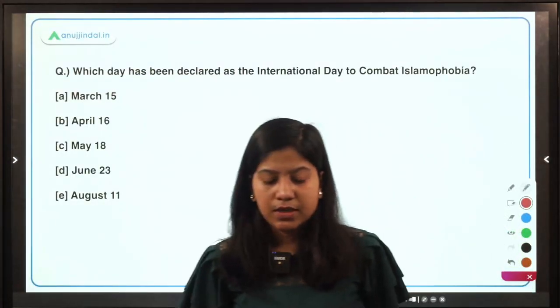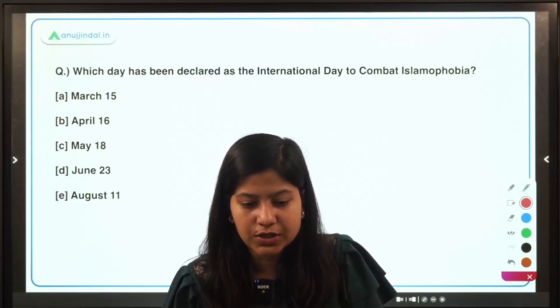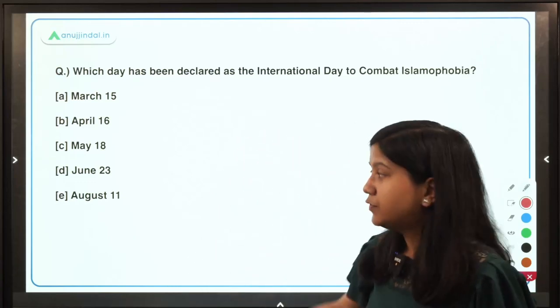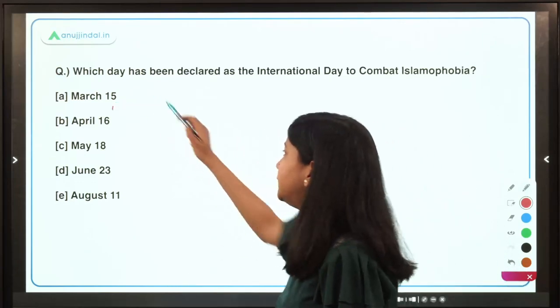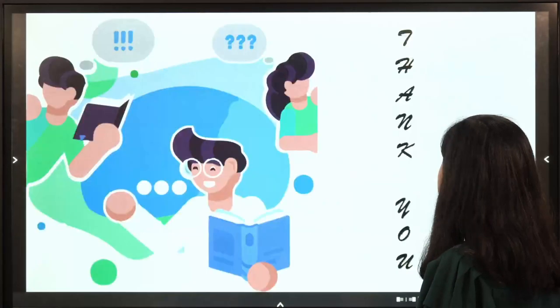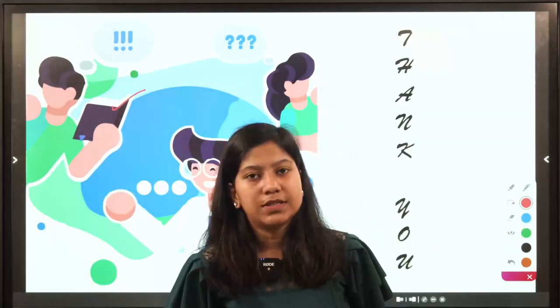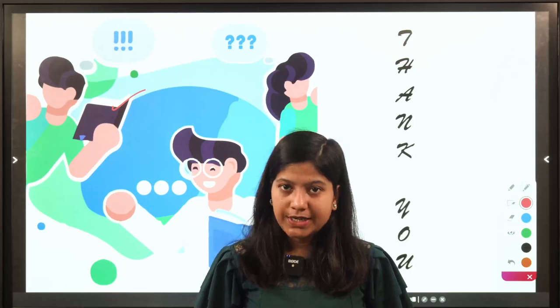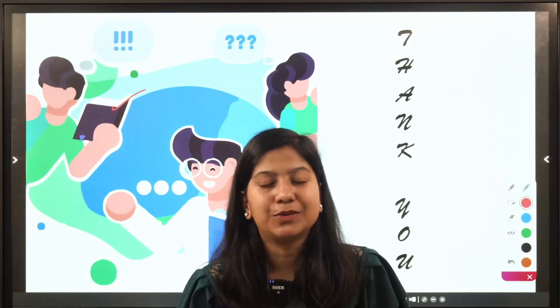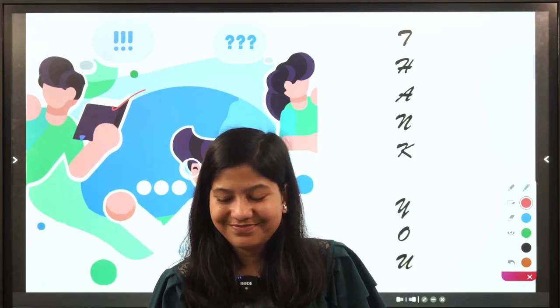Which day has been declared as the International Day to Combat Islamophobia? March 15 is the right answer. Thank you so much for watching this video. If you enjoyed it, do not forget to subscribe to the channel and hit the bell notification.